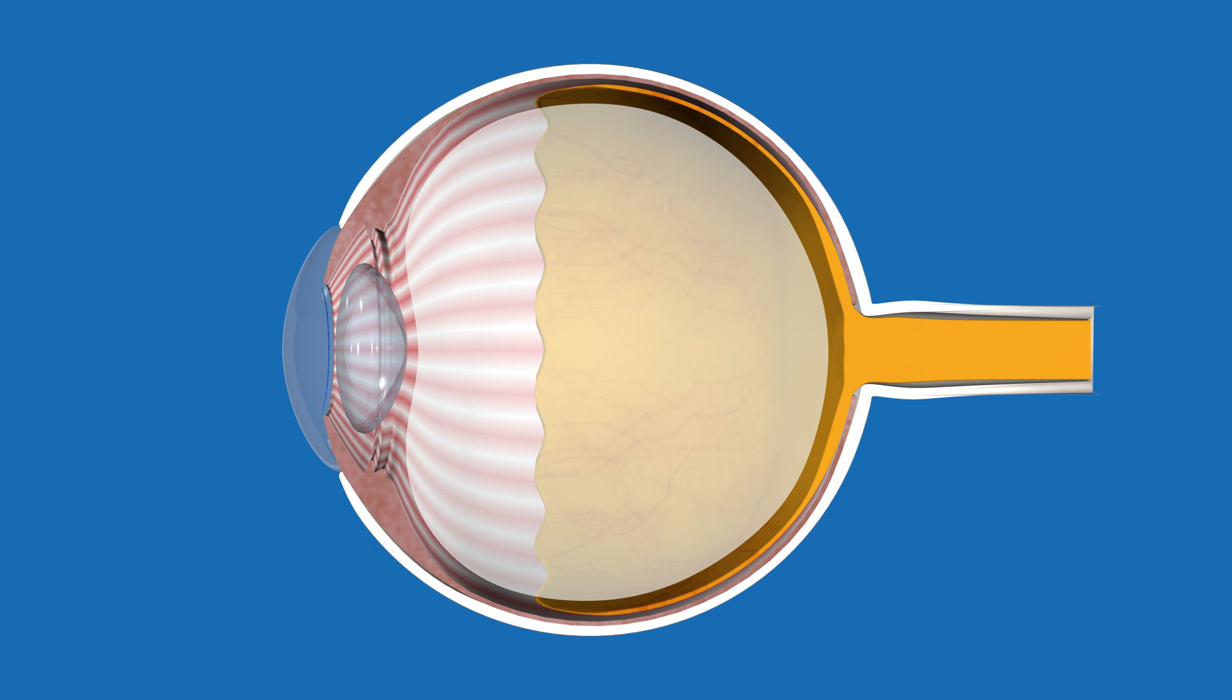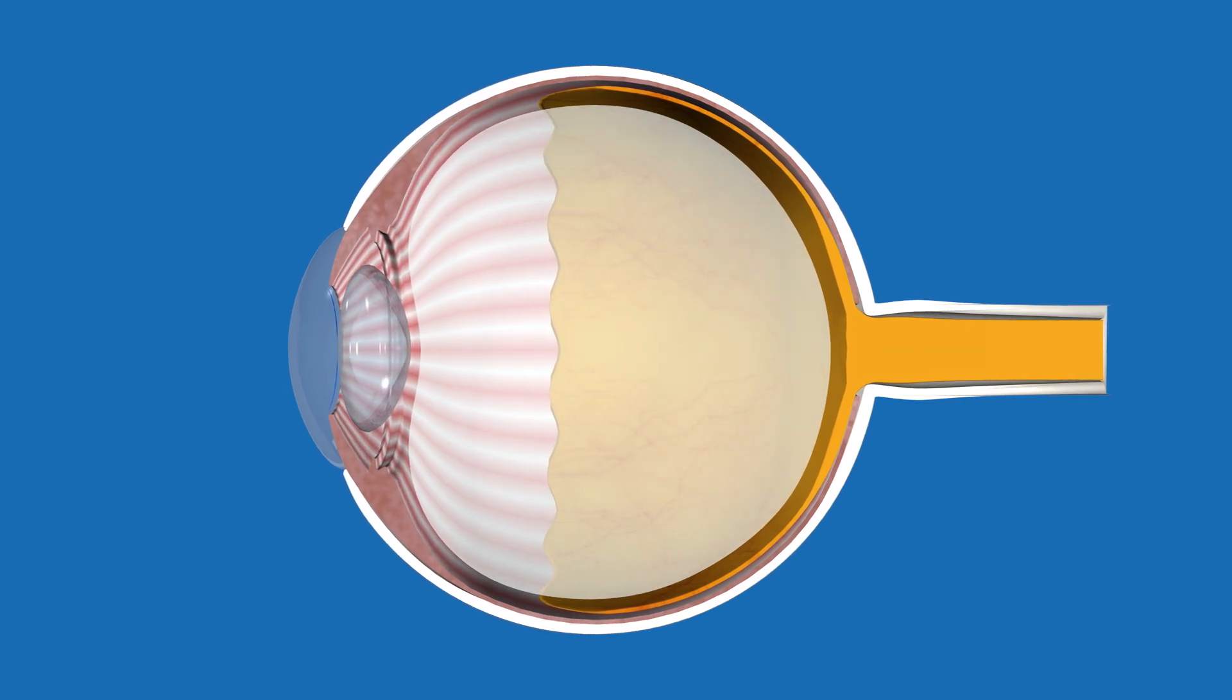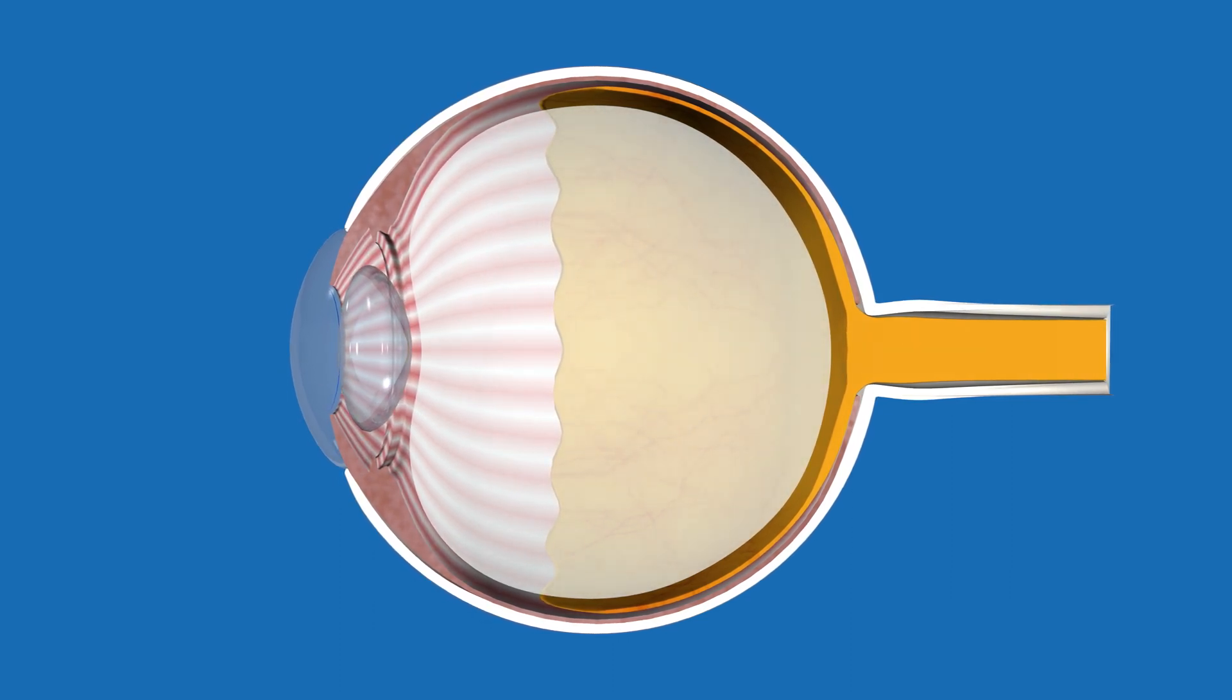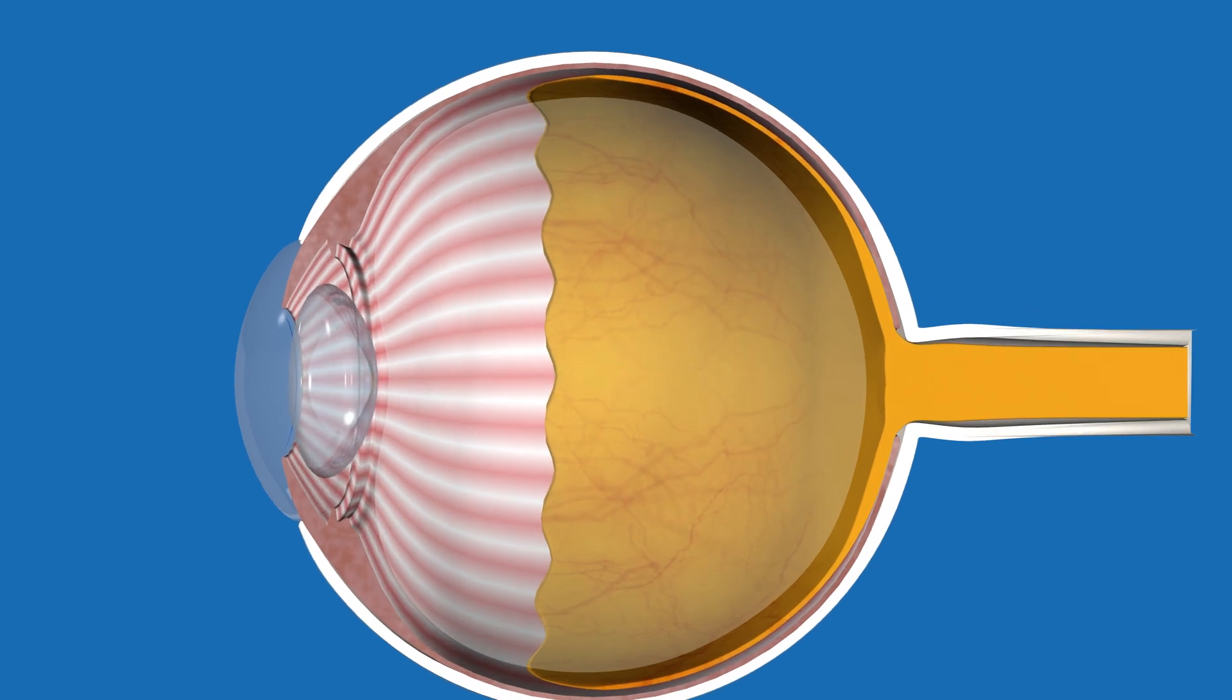The vitreous is a jelly-like substance that fills the eye and forms its shape. It is located behind the lens and is attached to the retina by the posterior vitreous membrane.